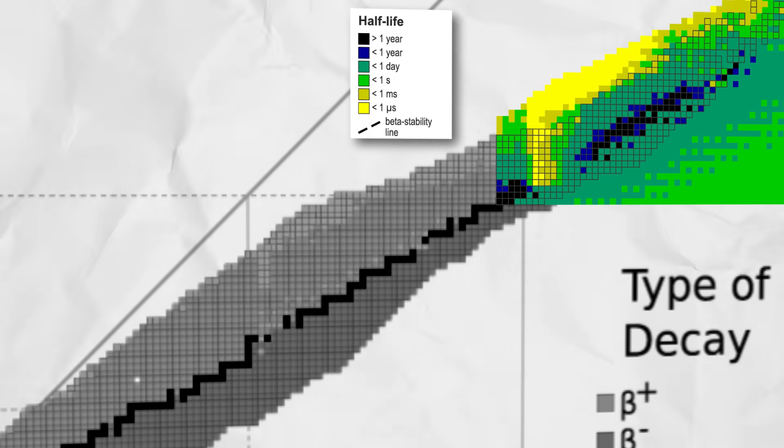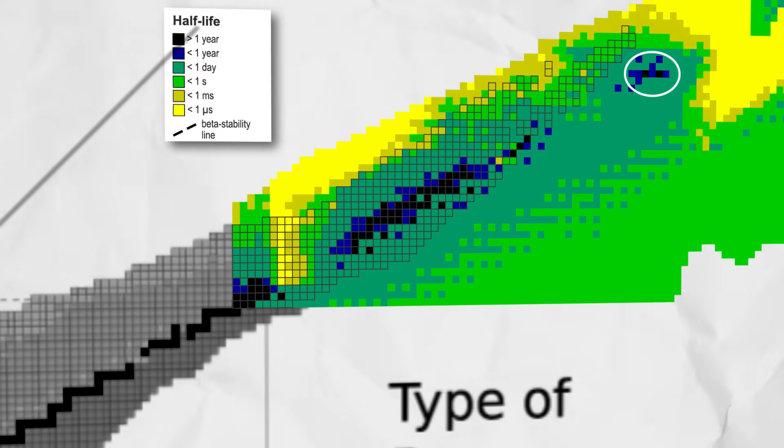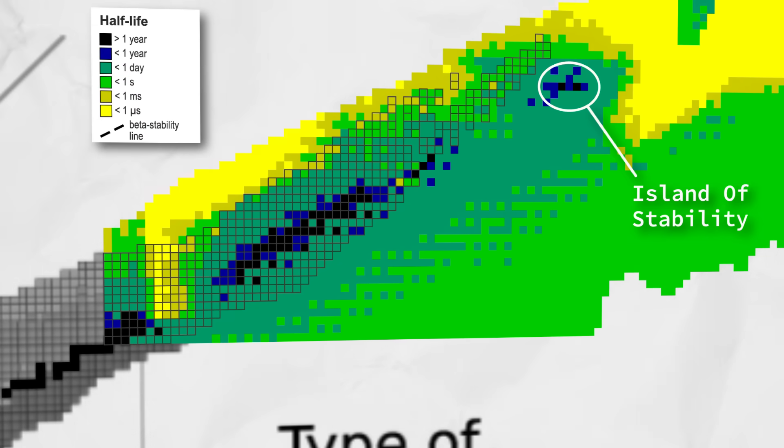But if we zoom out a little bit further, we find this, the island of stability, where a cluster of isotopes have uncharacteristically long half-lives.